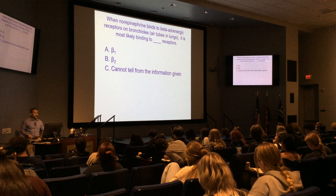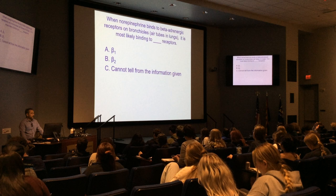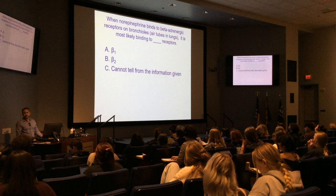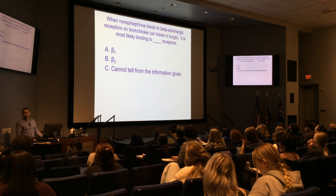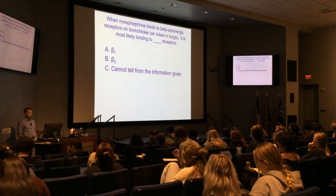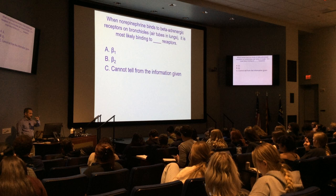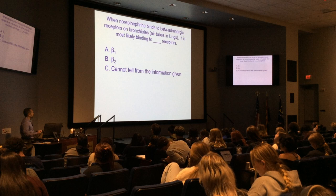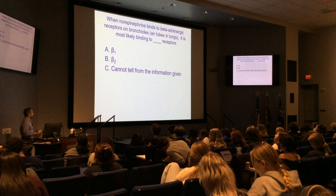Here's another question: norepinephrine binds to a beta adrenergic receptor on bronchioles — the air tubes in the lungs. Is it most likely binding to beta-1s, beta-2s, or cannot tell? Beta-2s — it's inhibitory and promotes vasodilation and increased perfusion. Another example of how I might ask that question on exam 4.